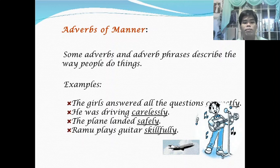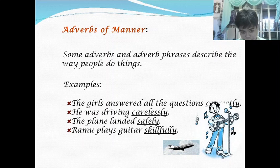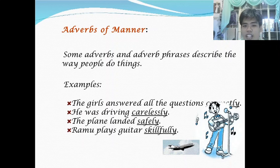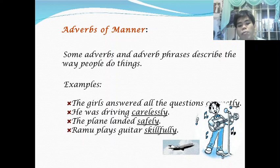Next, adverb of manner. Adverb of manner describes how — the way people do things. It answers the question 'how.' Examples: the girls answered all the questions quietly, eagerly, correctly; he was driving carelessly; the plane landed safely.